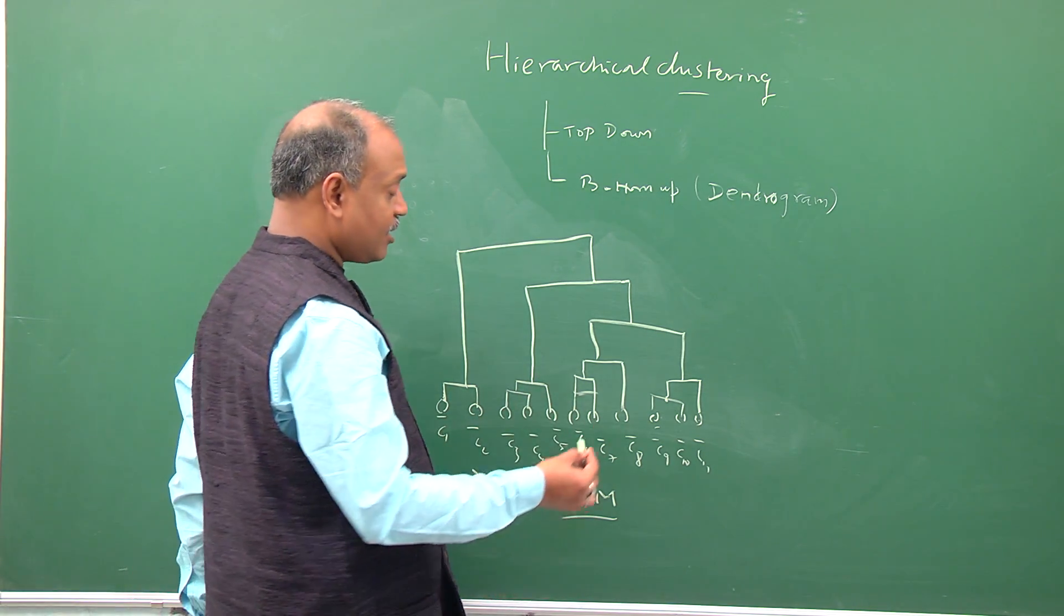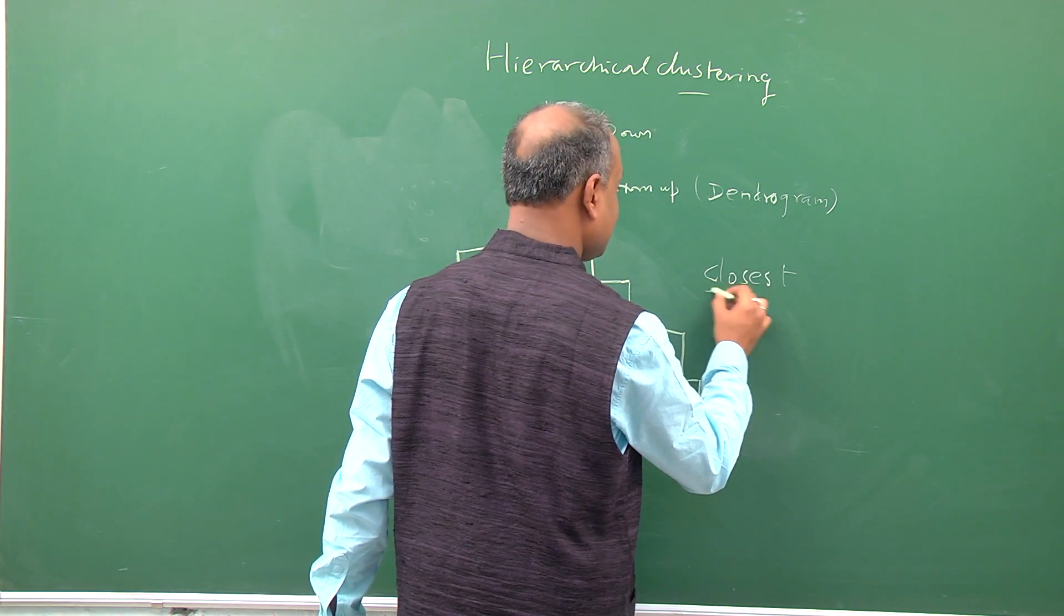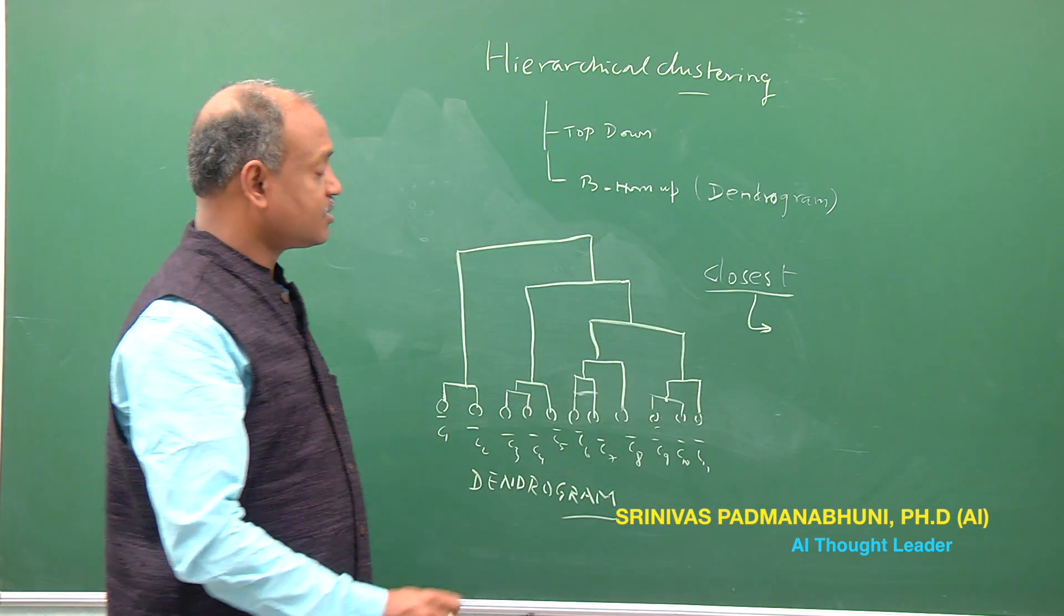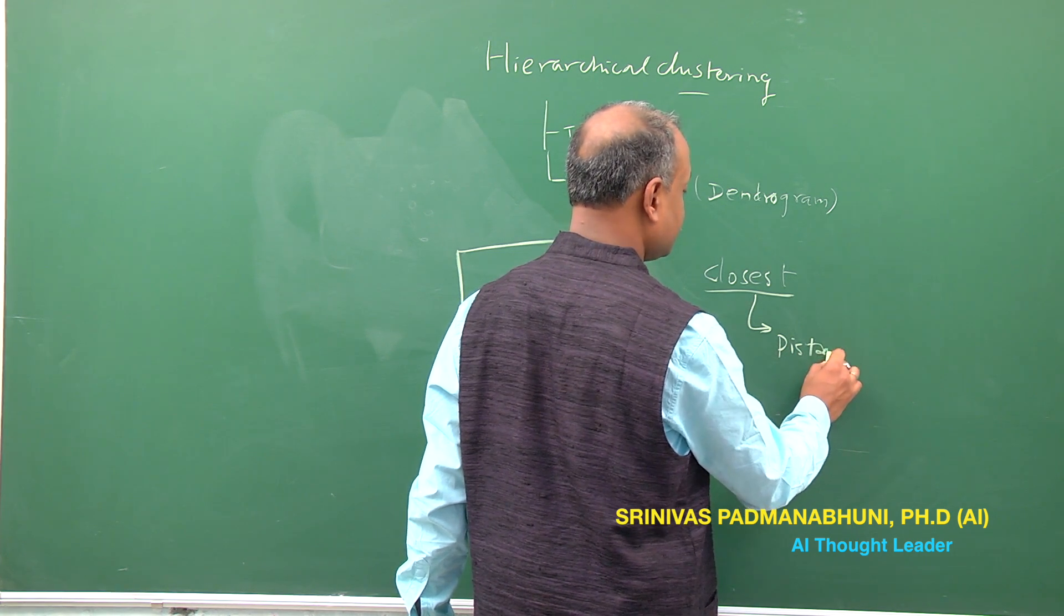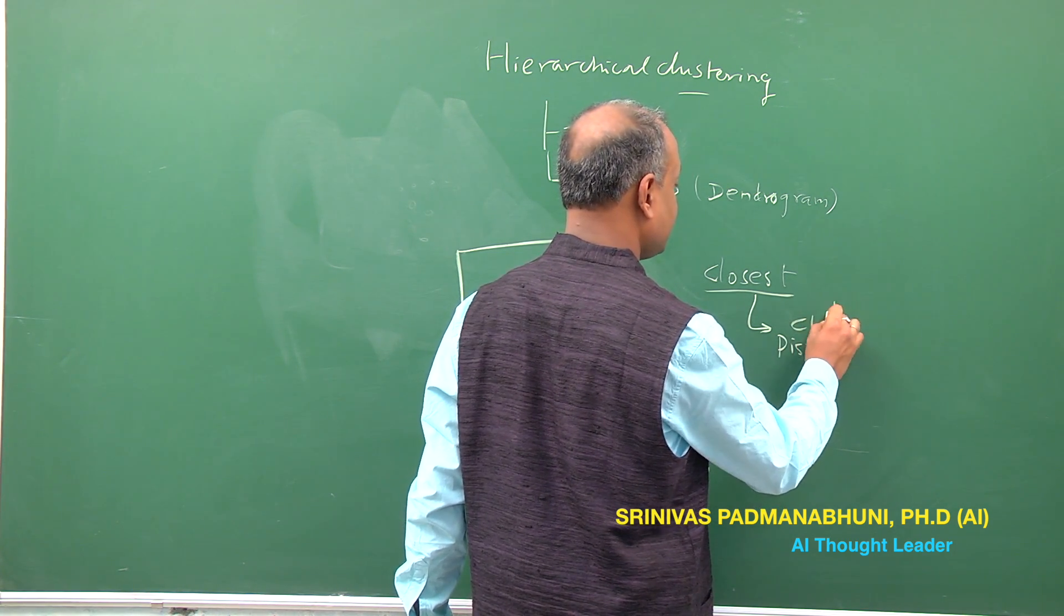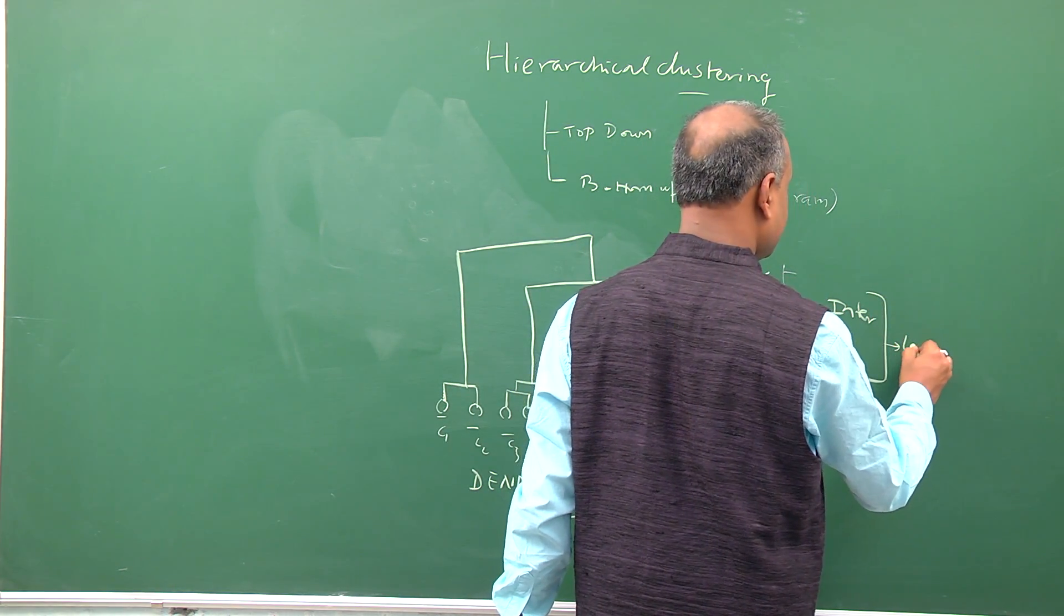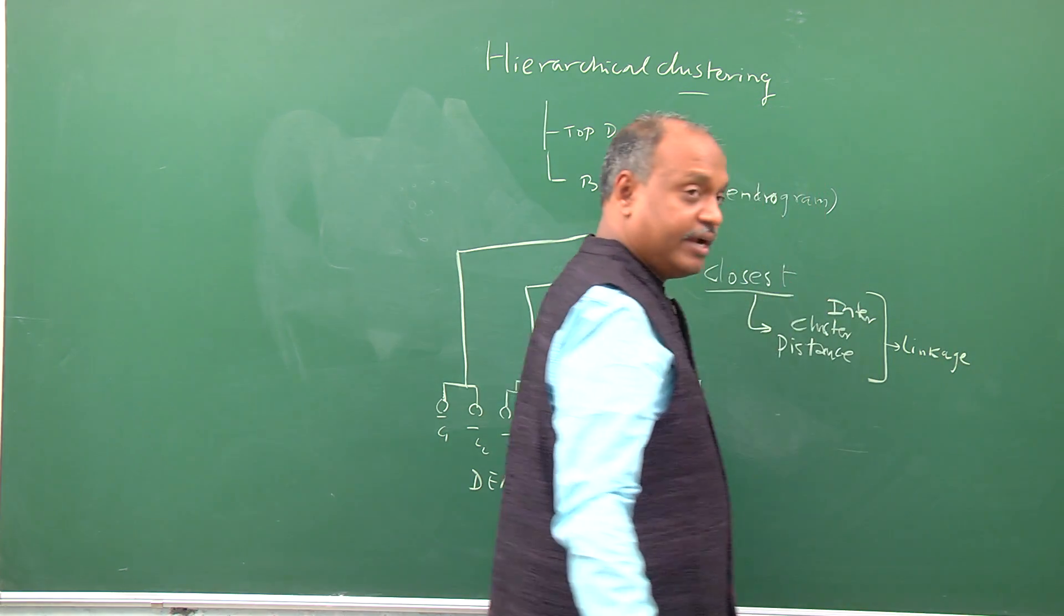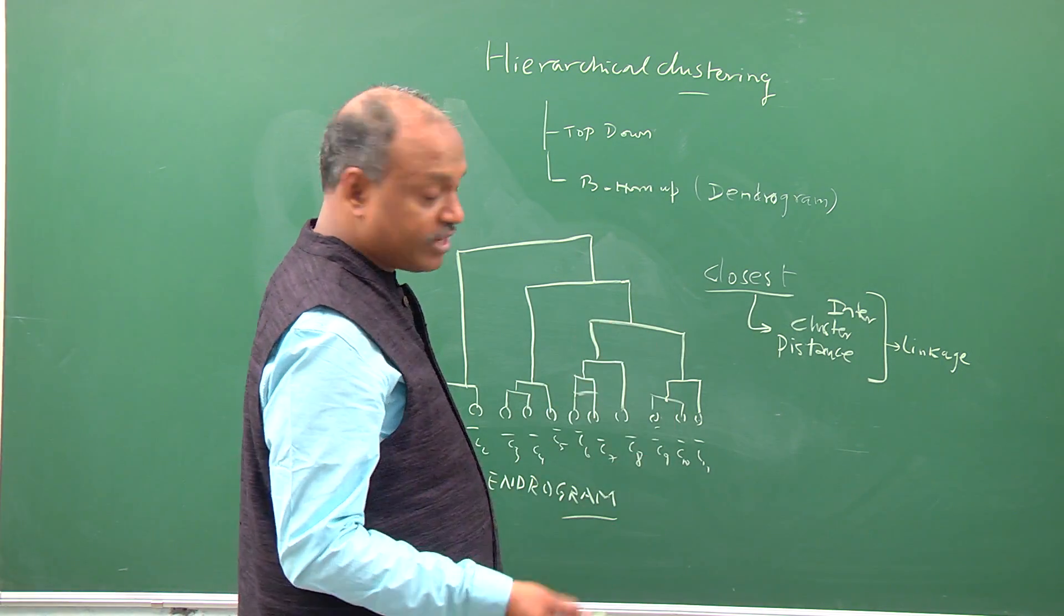So when you say two closest clusters, we need to understand that there is a semantics of two closest clusters. The two closest clusters are determined by how the distance between clusters is measured - inter-cluster distance is measured in multiple formats, they are known as the linkage type. So the inter-cluster distance based on linkage can be measured in four different ways.